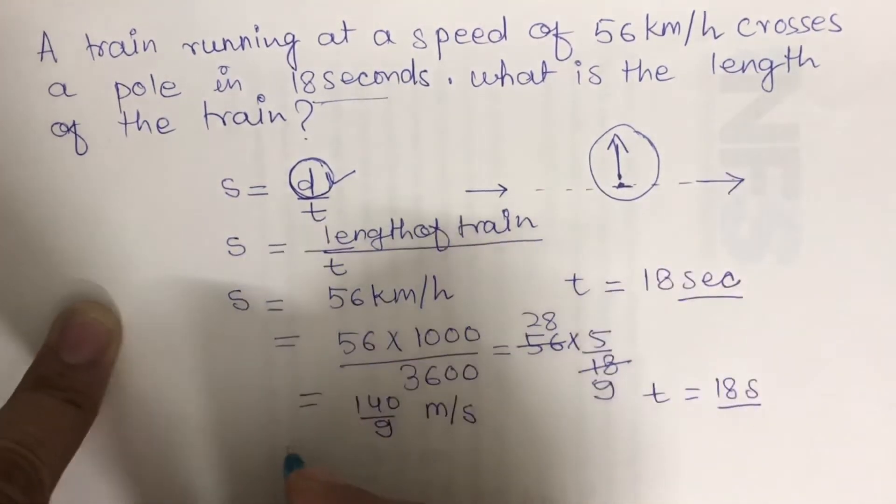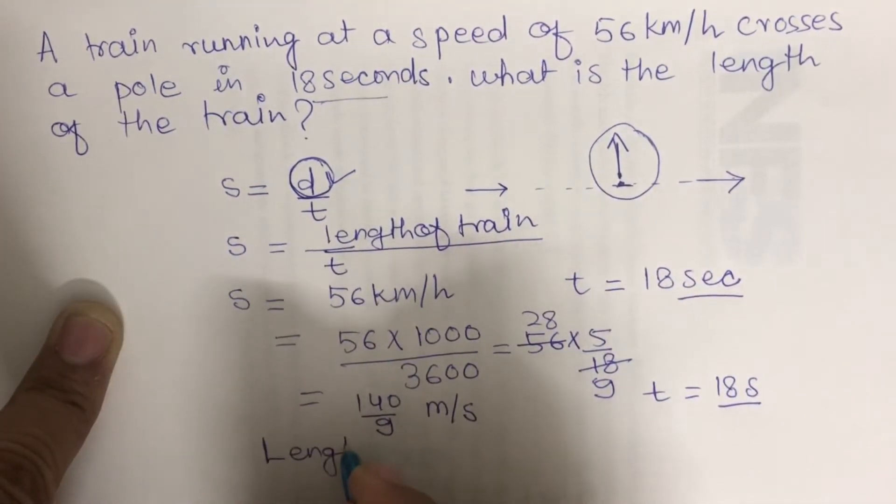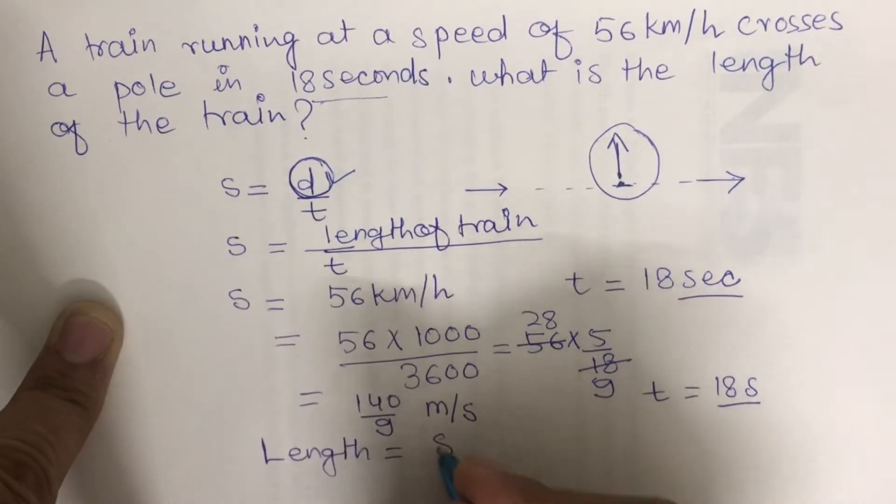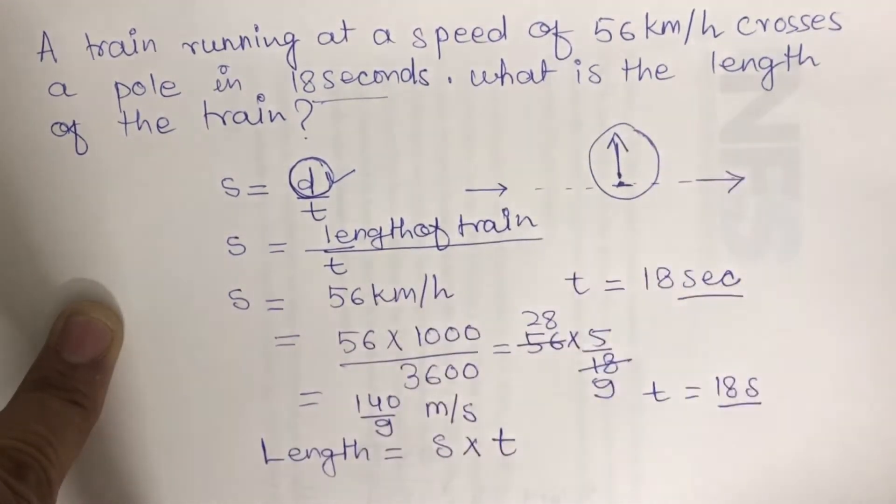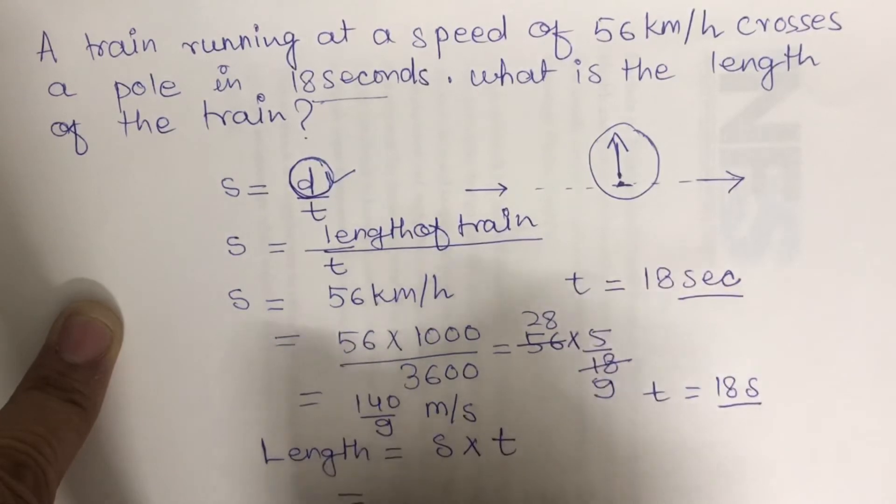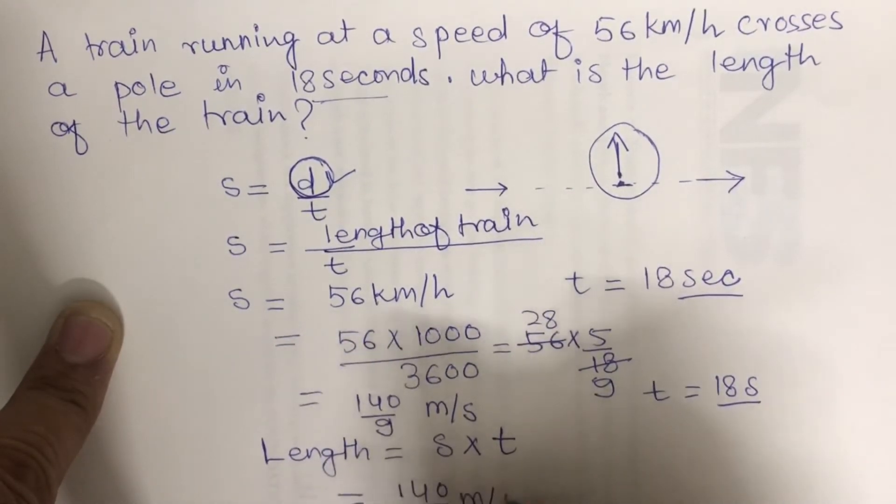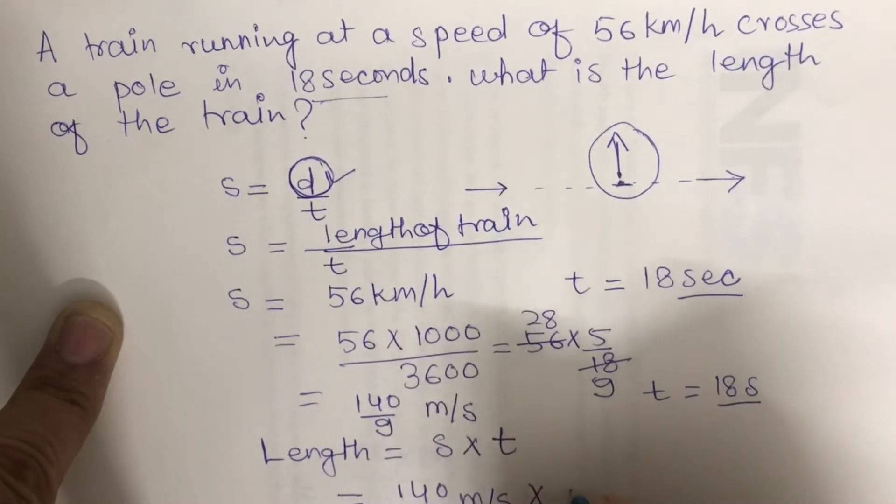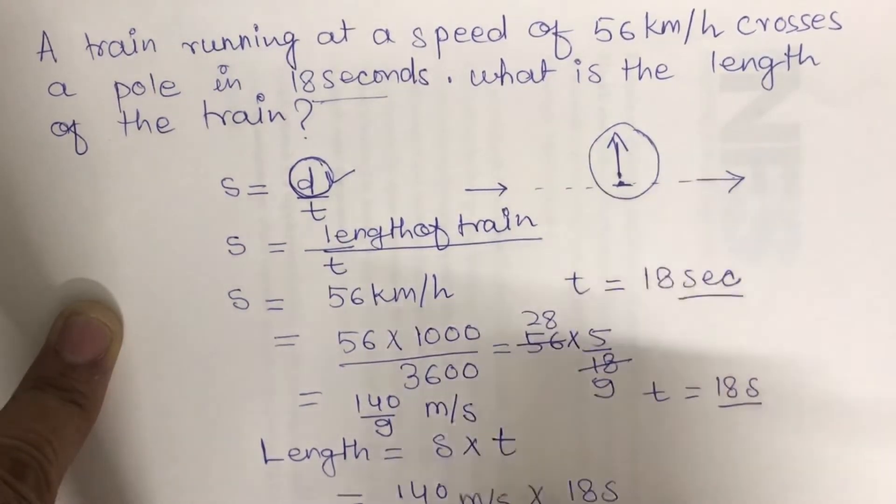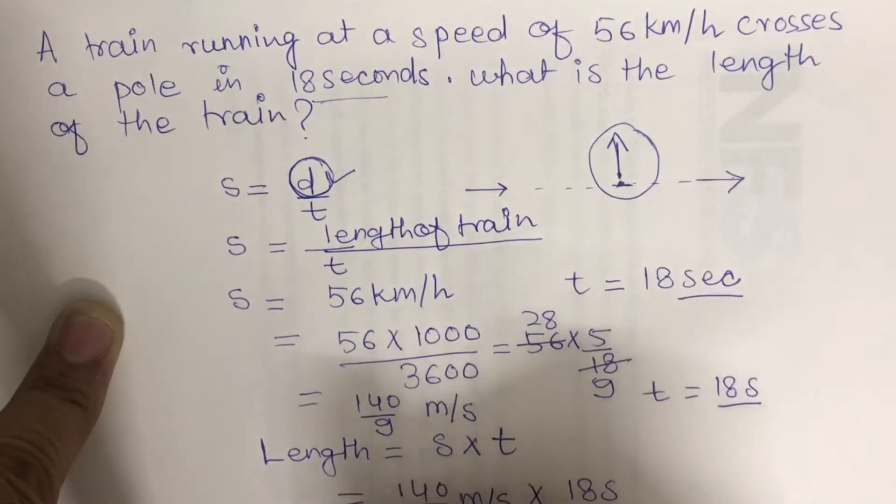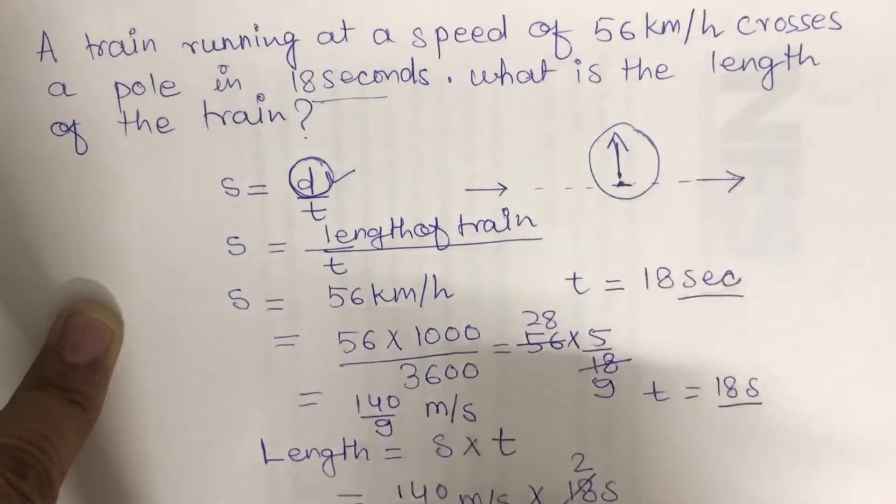Now we can easily calculate the length of the train, which equals speed times time. In our case, 140/9 meters per second multiplied by 18 seconds. 9 times 2 is 18, so the length of the train would be 280 meters.